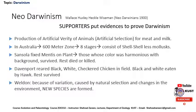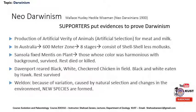Similarly, Davenport reared black, white, and checkered chickens in the field. The black and white chickens were eaten by the hawk, while the rest survived because their color was harmonious with the background. According to Weldon, because of variation caused by natural selection and changes in the environment, new species are formed.